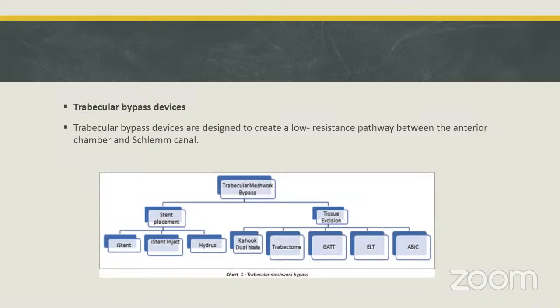Trabecular bypass devices are designed to create a low resistance pathway between the anterior chamber and Schlemm's canal. There are two types: stent placement and tissue excision. For stent placement, we have three types — the eye stent, the eye stent inject (second generation), and the Hydrus. Tissue excision includes the Kahook dual blade, trabectome, GATT, and ABIC.